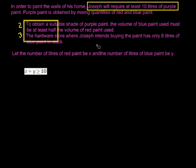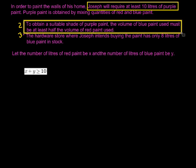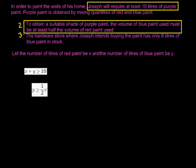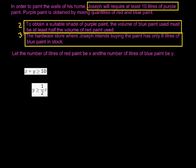For inequality 2: to obtain a suitable shade, the volume of blue must be at least half the volume of red. So blue, which is Y, must be greater than or equal to half the volume of red, which is X/2. For the third inequality: the hardware store only has 8 litres of blue paint in stock. So blue paint Y is less than or equal to 8 — I can't buy more than 8, so it's less than or equal to.